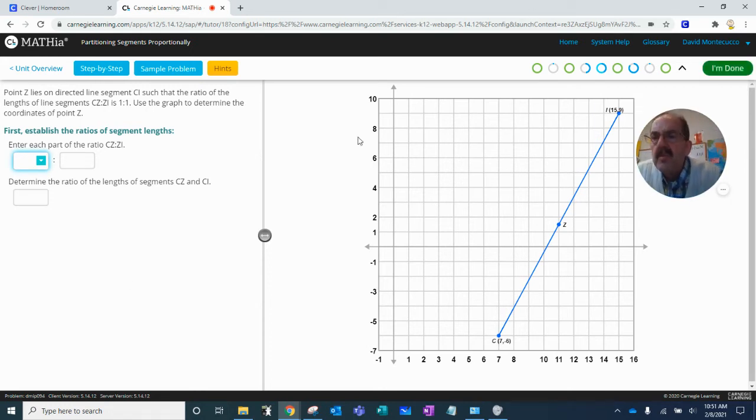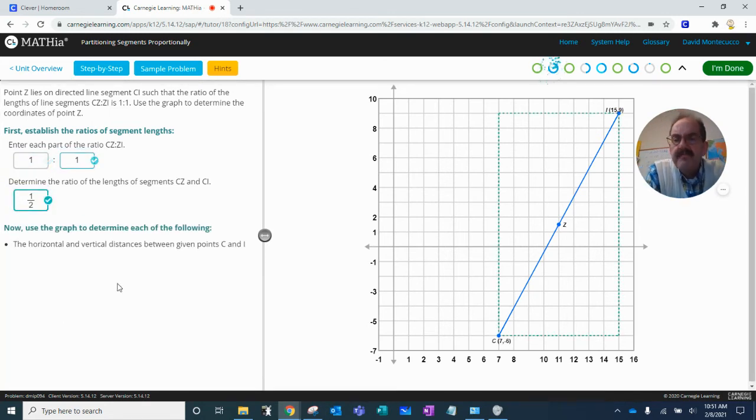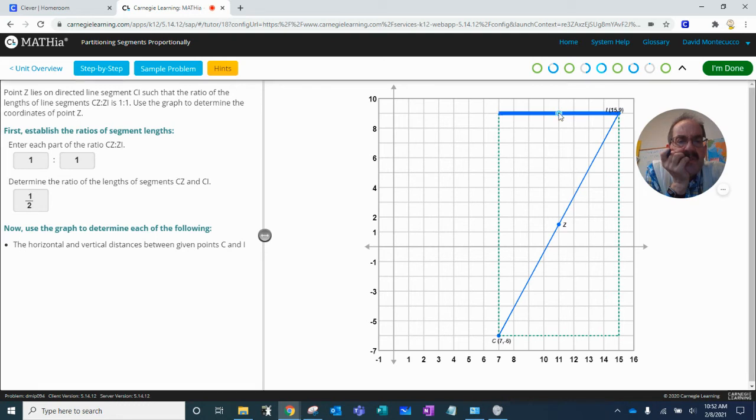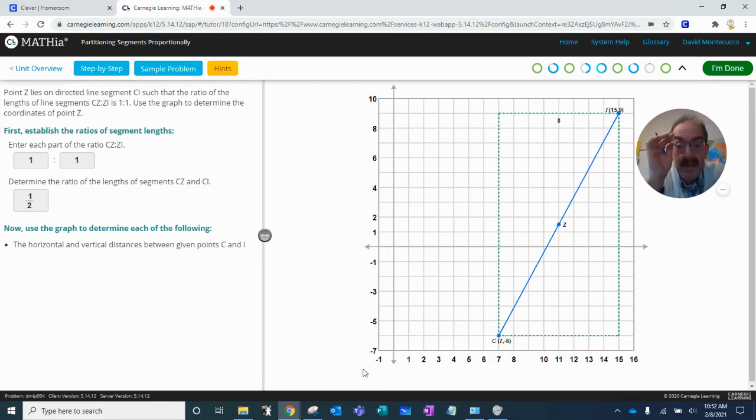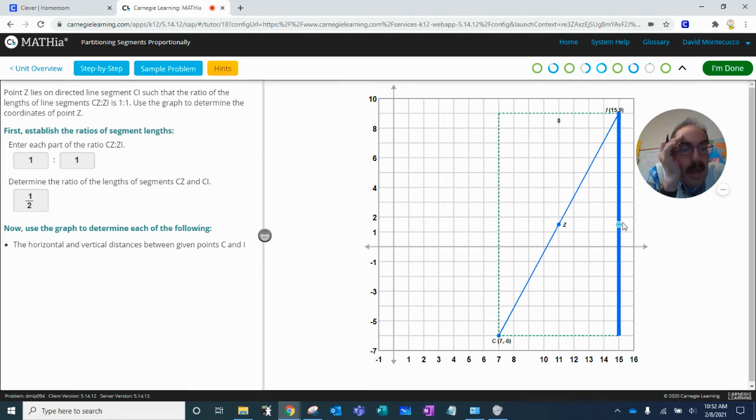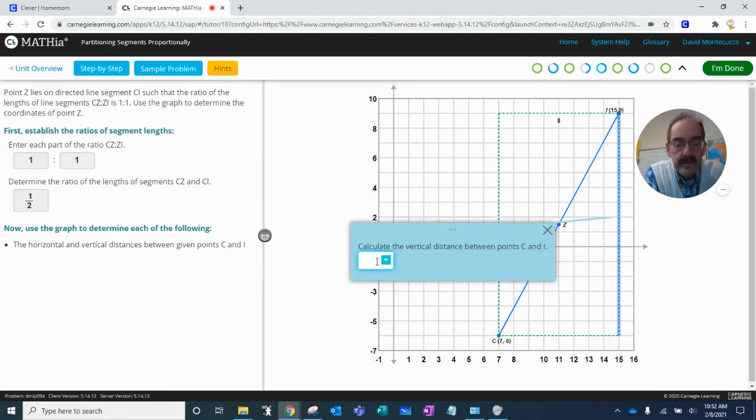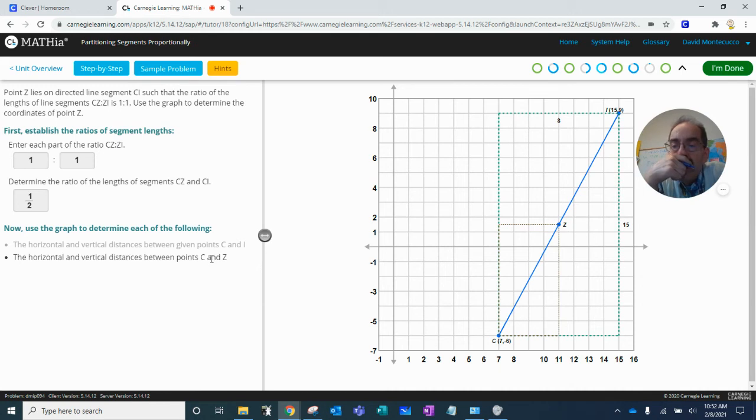Okay, 1 to 1, 1, enter. 1, enter, 1, enter, 2. Now, horizontal distance between C and I, horizontal C and I, 7, 15.